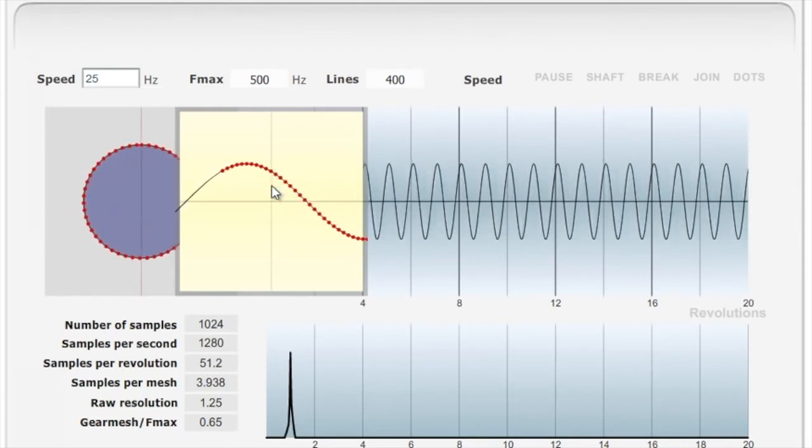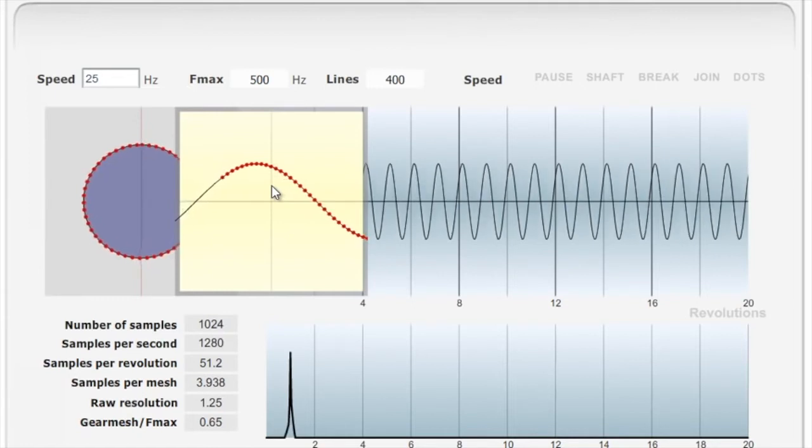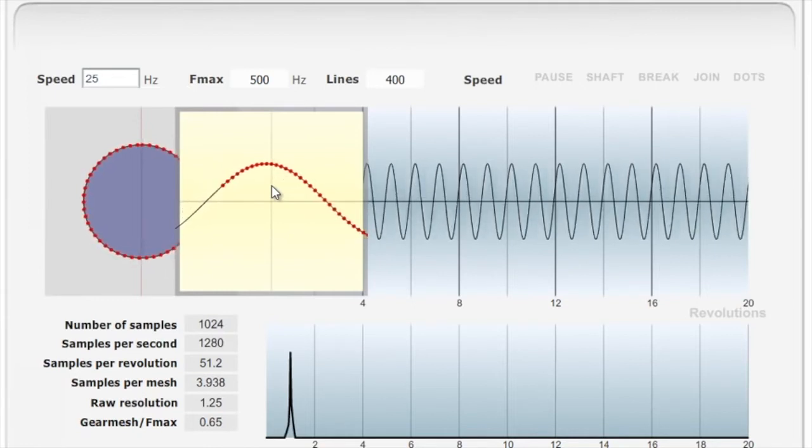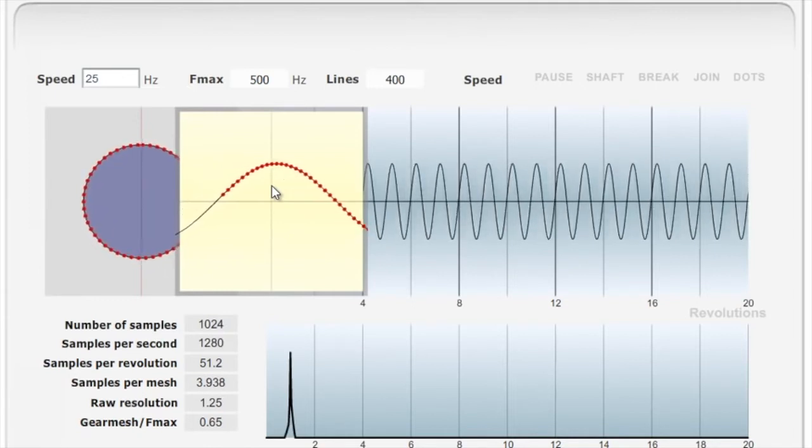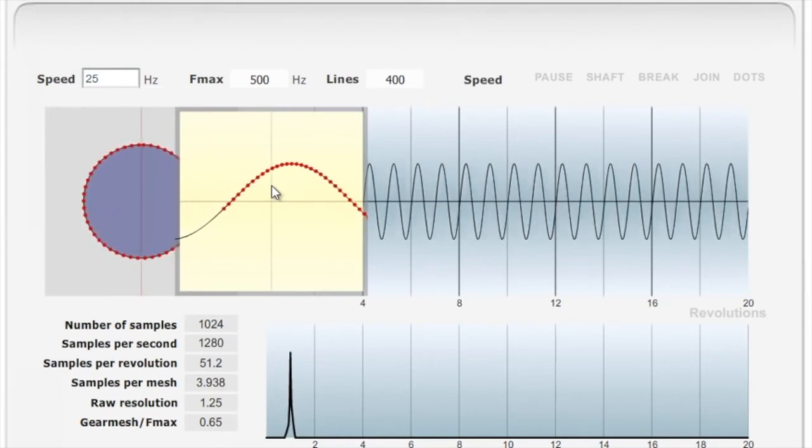You can see in this case that all those little red dots follow exactly along the black line, which is the analog signal, the actual vibration that we're measuring.